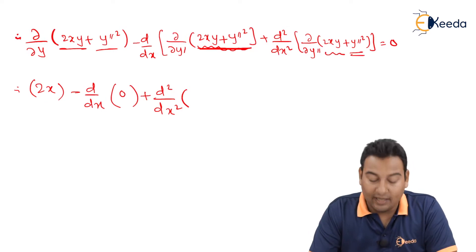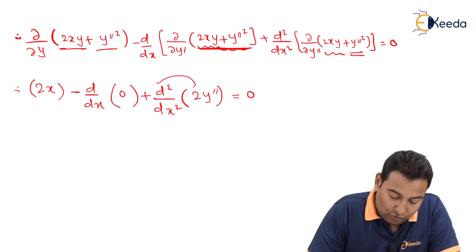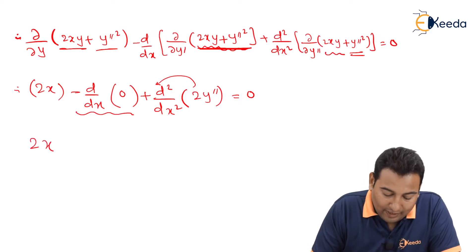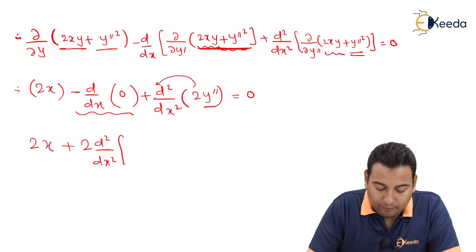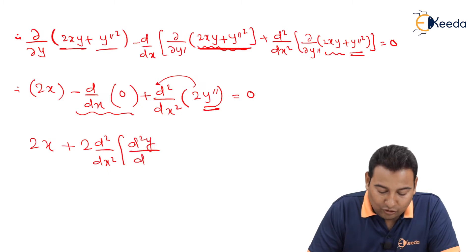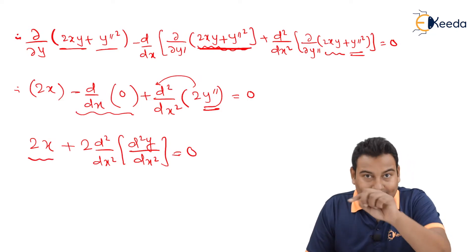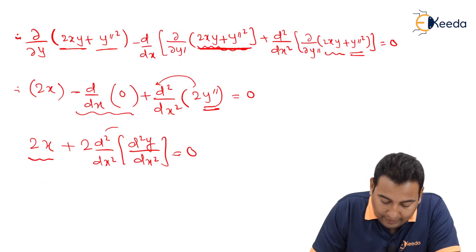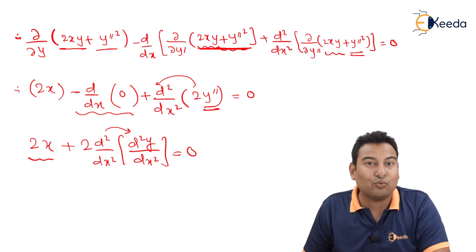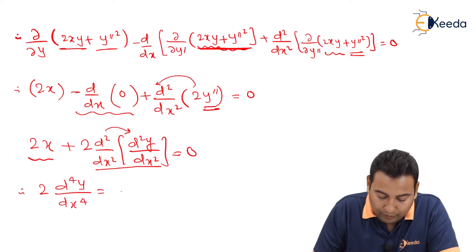For d²/dx² of ∂f/∂y double dash: the first term 2xy gives zero, and y double dash squared gives 2y double dash. So we have 2x plus 2·d²/dx² of y double dash equal to zero. This 2x and 2·d⁴y/dx⁴: writing y double dash as d²y/dx², applying d²/dx² gives d⁴y/dx⁴. So we get 2·d⁴y/dx⁴ minus 2x equal to zero.